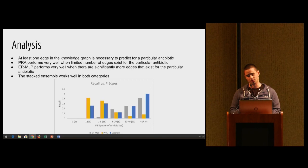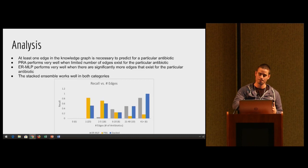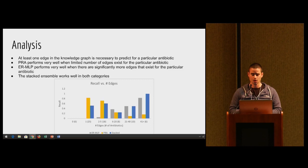The ERMLP is actually really good for antibiotics that actually have a limited number of edges in the knowledge graph. And you'll see that the stacked ensemble by combining these two approaches can actually do relatively well in all categories. The PRA does really well for antibiotics that have low number of edges represented in the knowledge graph. But the ERMLP actually works very well for antibiotics that have high number of edges. The PRA appeared to work better because there was more antibiotics that had limited number of edges in the test set. That's just more of a common case for antibiotics in general.